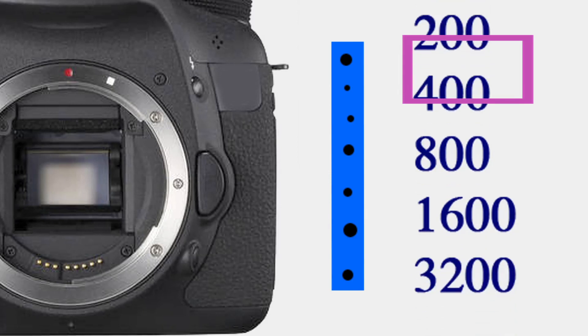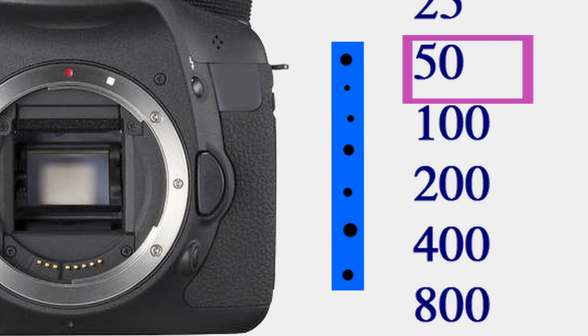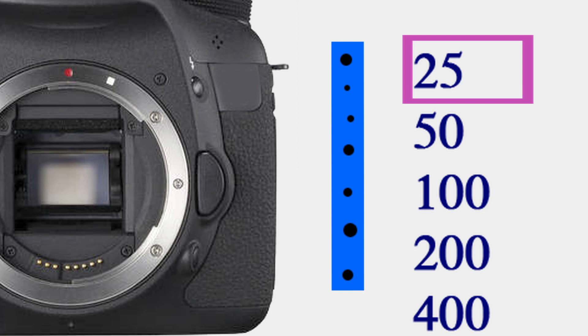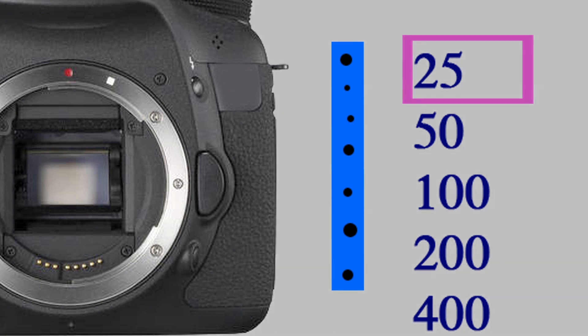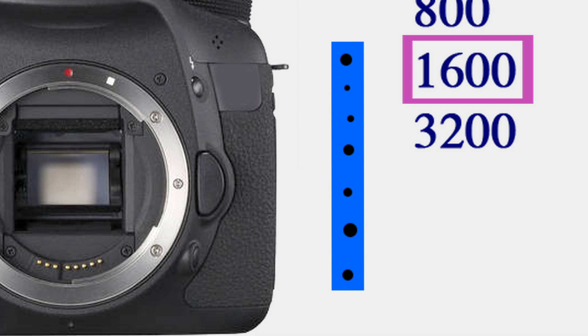The smaller the ISO number, the less sensitive it is to light. Shooting a lower ISO like 25 means you get a higher quality image without grain or noise. But if you're in a darker situation — maybe indoors where light isn't as available — you might have to shoot at 1600, which is more grainy and has more noise.